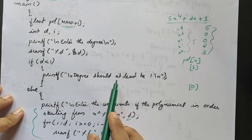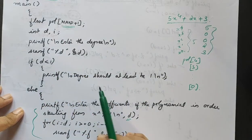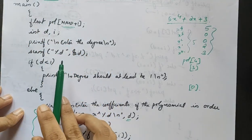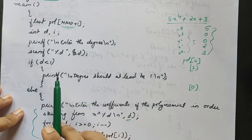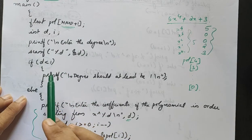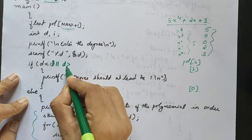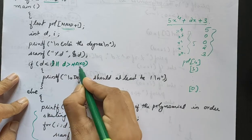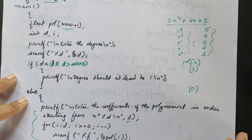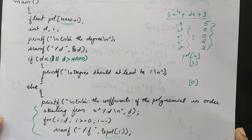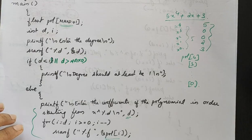We check if d is less than 1 or d is greater than MaxD. We will accept d and check: if d is less than 1 or greater than MaxD, we send the message that the degree should be between 1 and MaxD, then re-prompt the user.